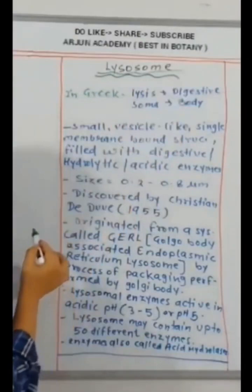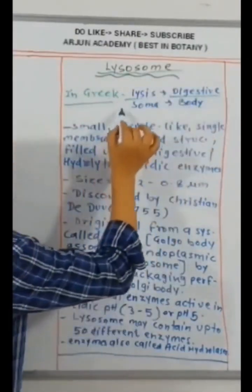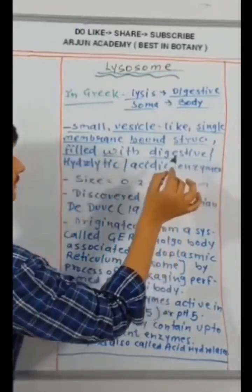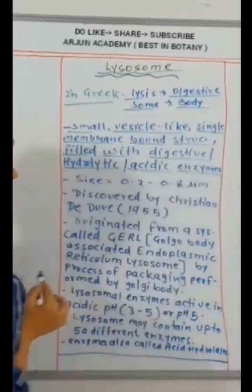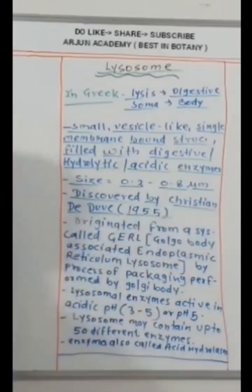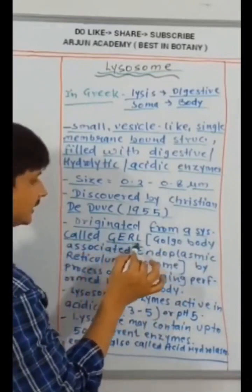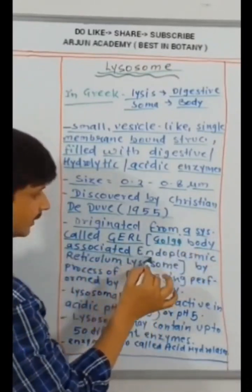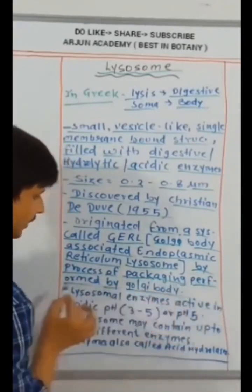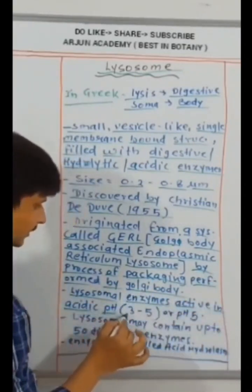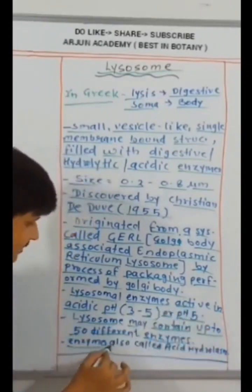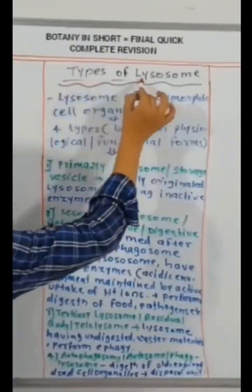Lysosome, in Greek, lysis meaning digestive, soma meaning body. Small vesicle-like, single membrane-bound structure, filled with digestive or hydrolytic or acidic enzymes. Size 0.2 to 0.8 micrometer. Discovered by Christian de Duve, 1955. Originated from a system called GERL, Golgi body-associated endoplasmic reticulum lysosome. By process of packaging performed by Golgi body. Lysosomal enzymes active in acidic pH 3 to 5 or pH 5. Lysosome may contain up to 50 different enzymes, also called acid hydrolases.